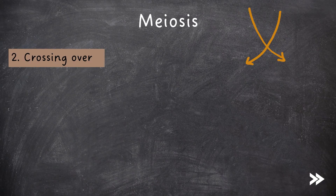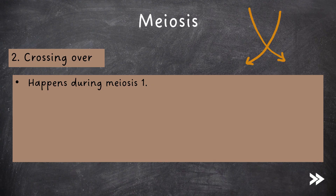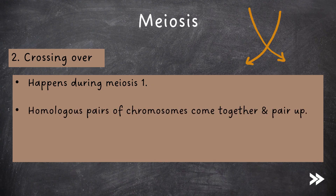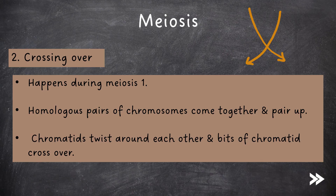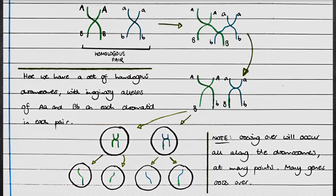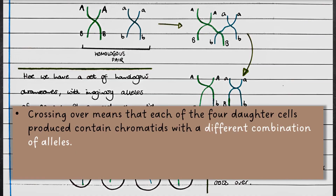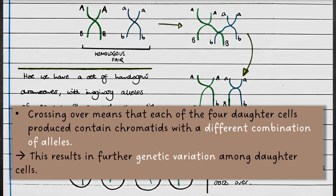Next we have crossing over, which happens during meiosis 1. During crossing over, homologous pairs of chromosomes come together and pair up. The chromatids twist around each other and bits of chromatid cross over. On the diagram, we have a homologous pair of chromosomes that come together and bits of chromatid cross over. So although each chromosome started off with either all uppercase A and B alleles or lowercase A and B alleles, they now have mixed combinations. Crossing over occurs all along the chromosomes at many different points, meaning that each of the four daughter cells produced contains chromatids with different combinations of alleles, resulting in further genetic variation.